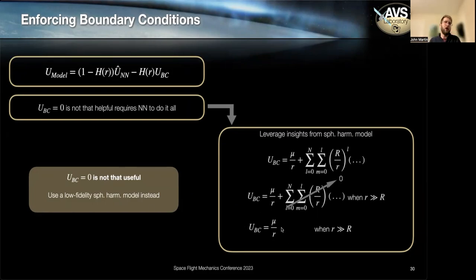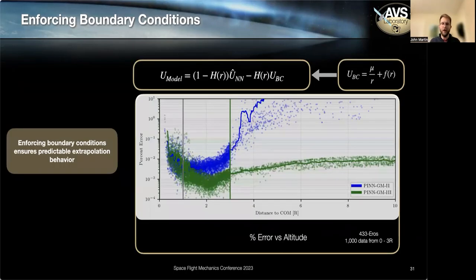And we can actually turn to things like spherical harmonics to answer that question. So we know that the high order frequencies of spherical harmonics decay to zero at high altitudes, and you're left with a point mass approximation. So what if we call a point mass approximation our boundary condition? And again, decrease the neural network and increase the point mass model and in this way enforce the proper behavior at these extremely high altitudes. So that's what we do.